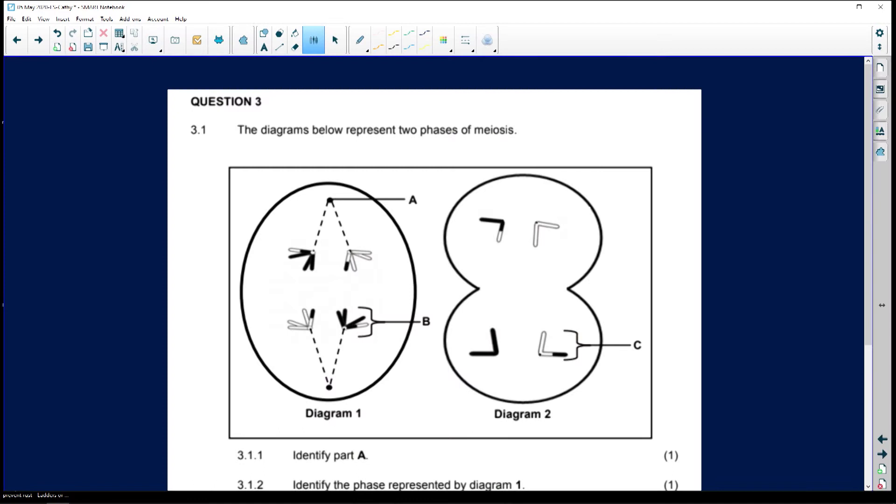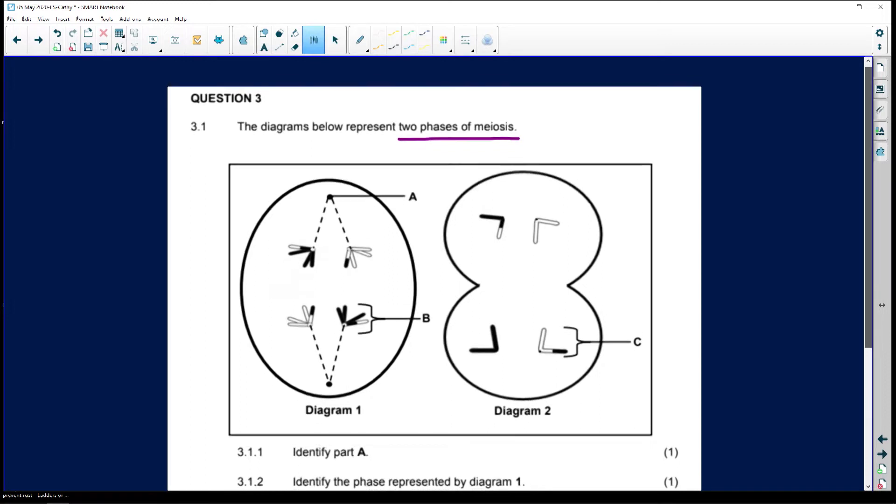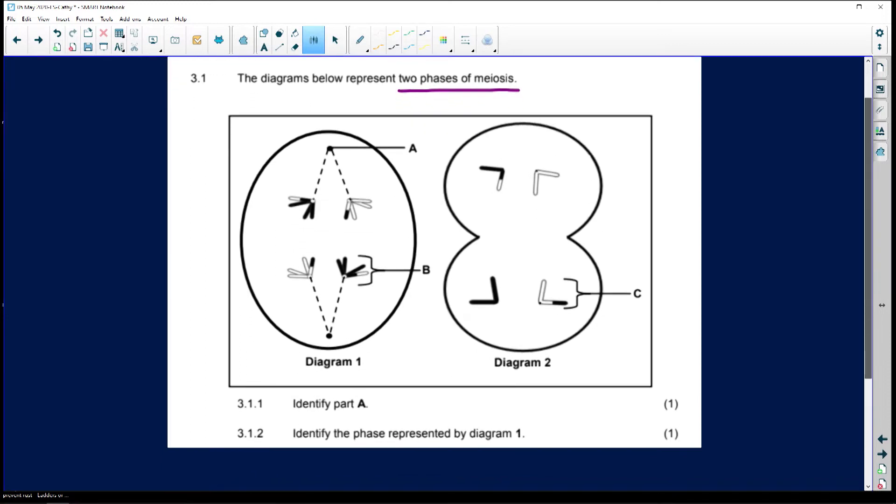Right, now we look at question three. The diagram below represents two phases of meiosis. You can always expect a question in the exam in both paper one and two on meiosis and they are going to give you diagrams. You must know how to identify the diagrams.